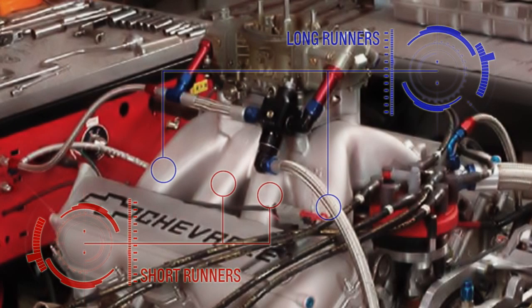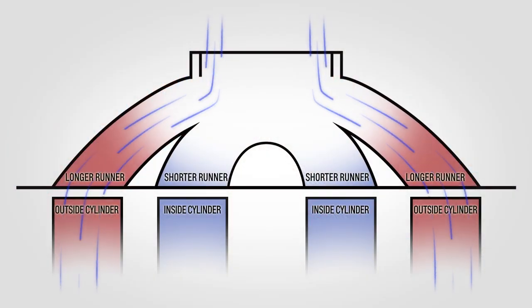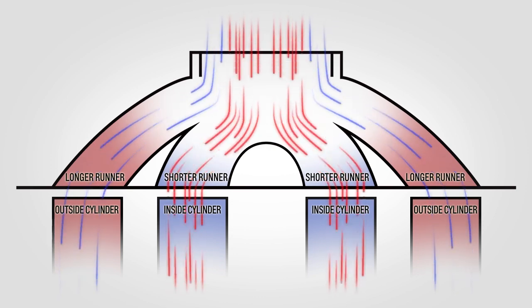In a four-barrel carbureted or single throttle body V8 engine, if you tune for peak performance from the front and rear cylinders on each bank, you'll have rich air fuel ratios for the inside cylinders.